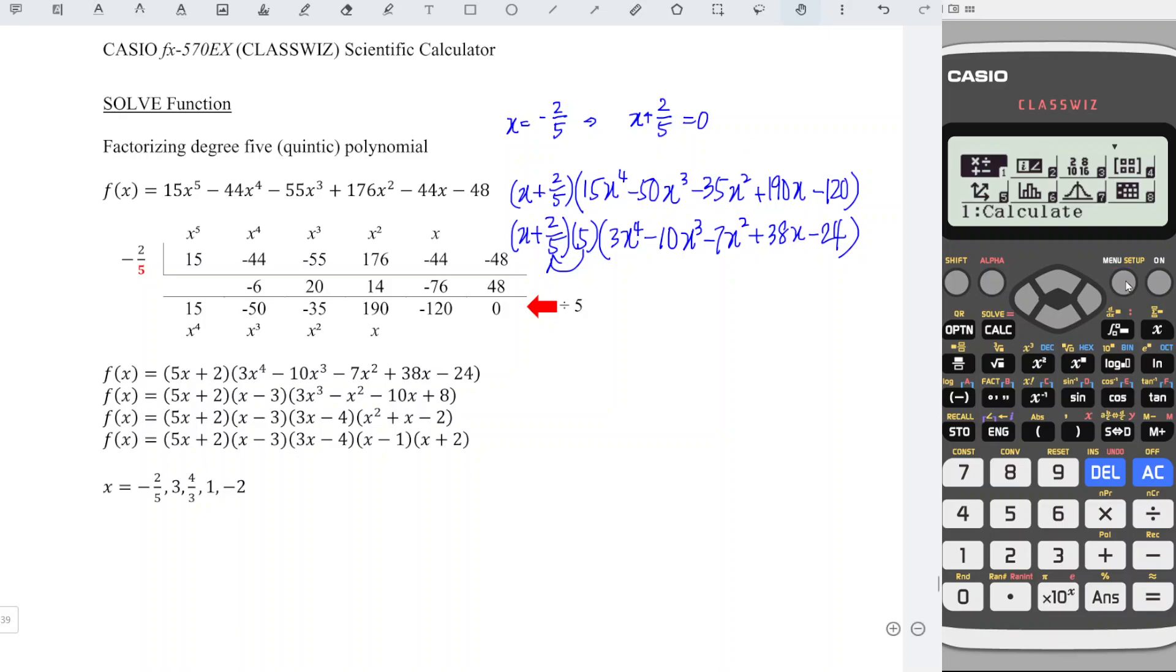We just have to press menu, down, and down, look for the equation function, press equal, look for polynomial 2, degree 4. And we just have to enter these coefficients accordingly, and we should obtain the rest of the roots.